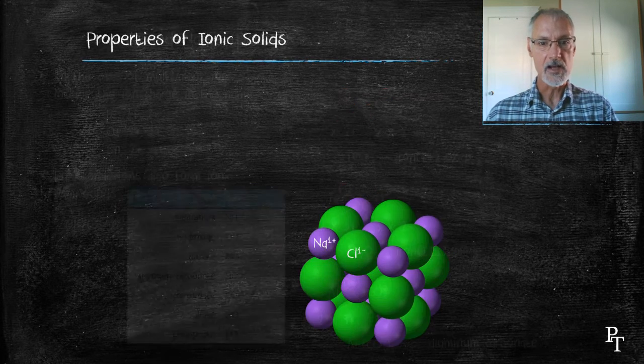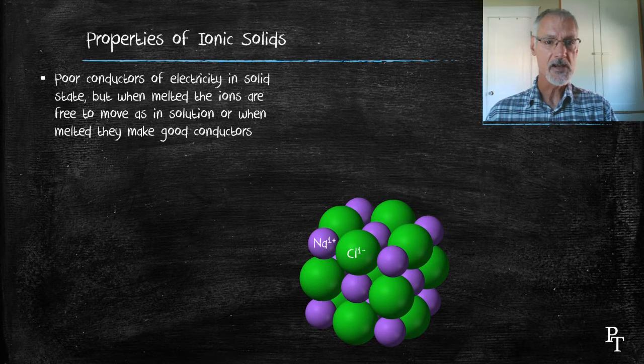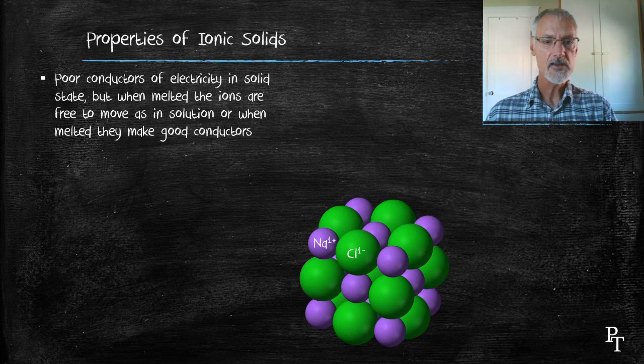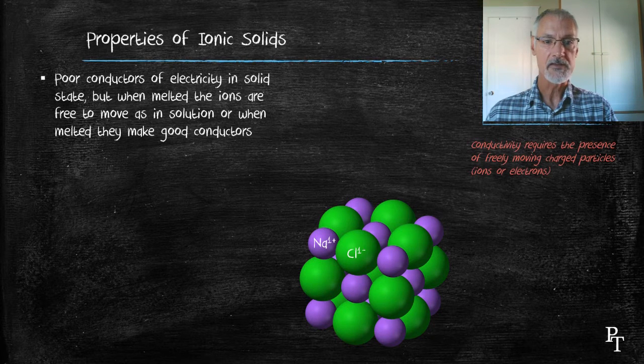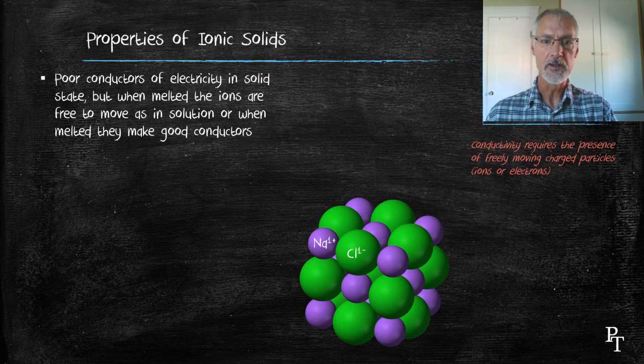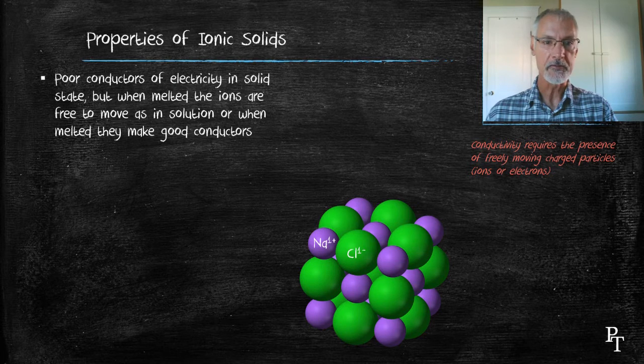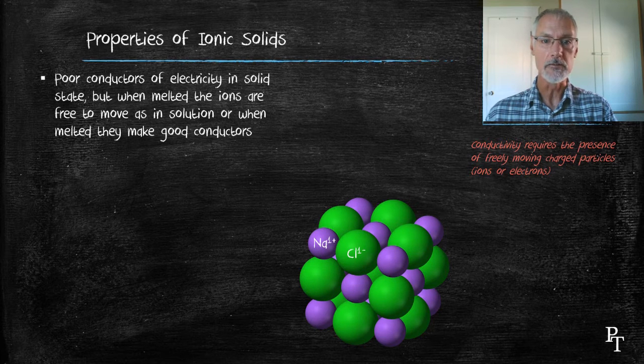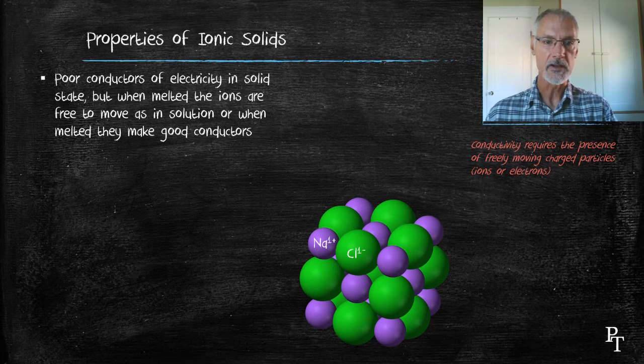The properties of these compounds. First of all, in the solid form, they're very poor conductors of electricity. Conduction requires the presence of compounds, or at least species, that are free to move. So either the ions have to be free to move, or electrons have to be free to move. In this case, the ions are locked in the crystal lattice and not free to move. So as a solid, it's a very poor conductor.